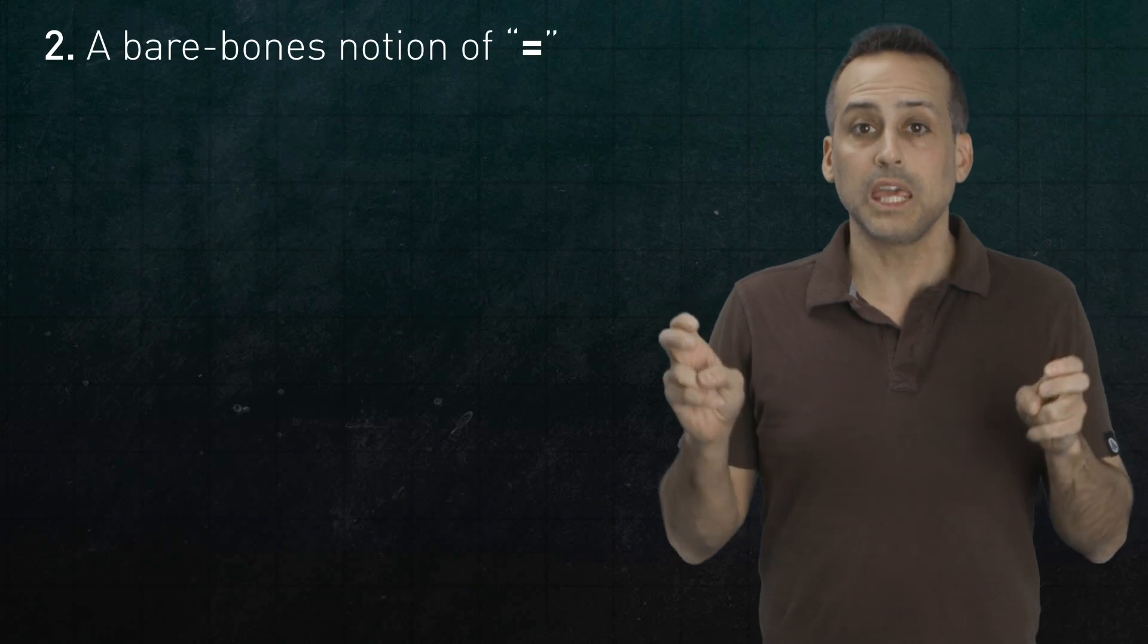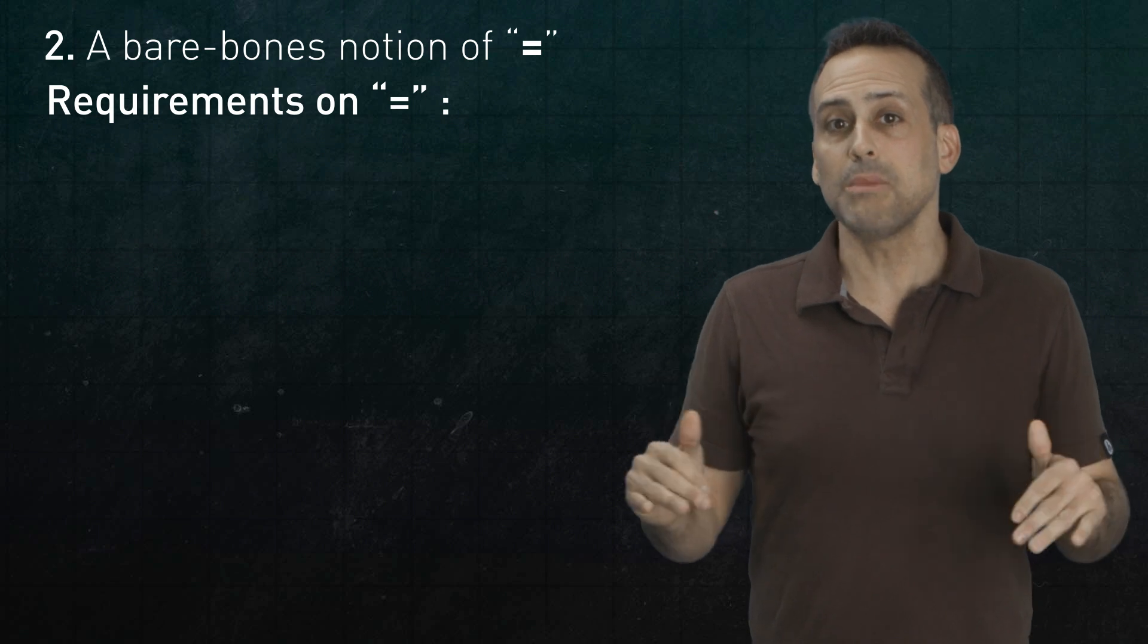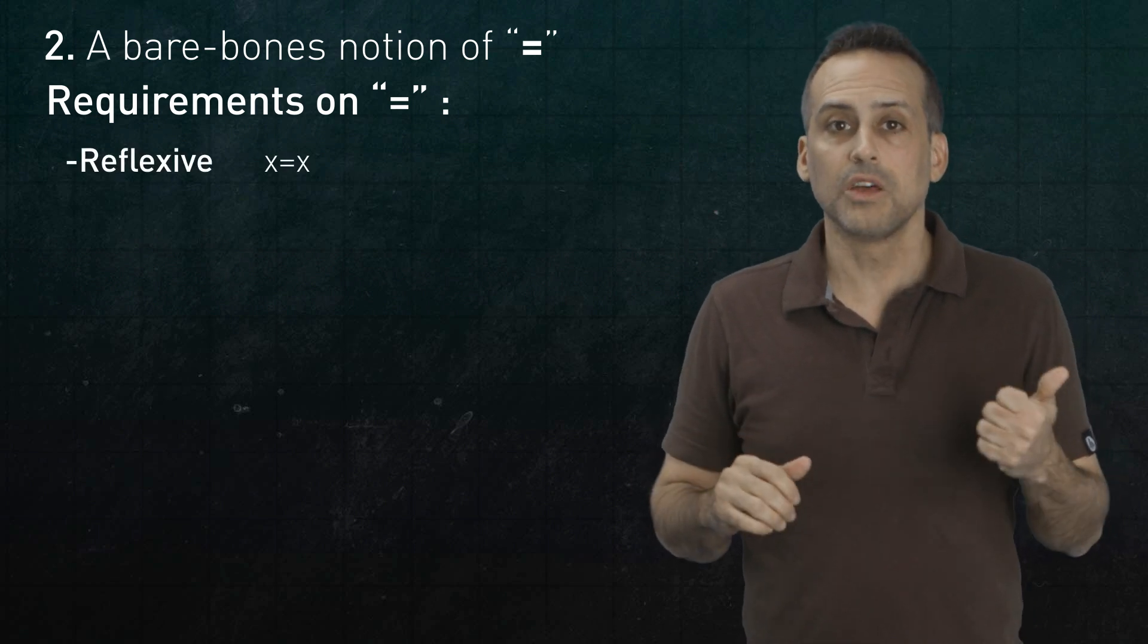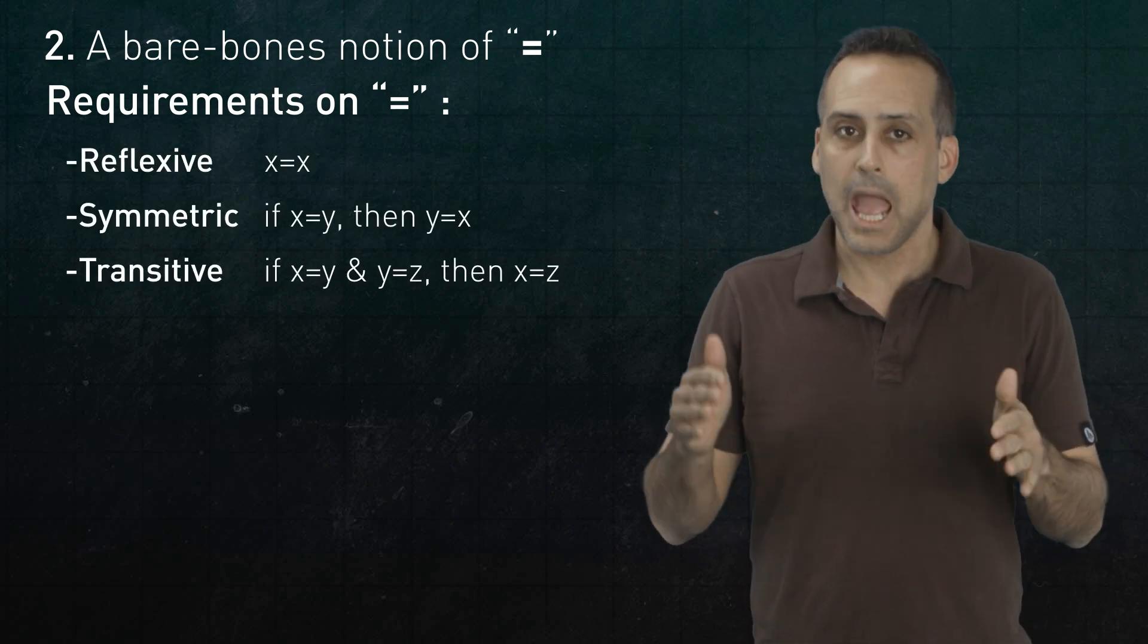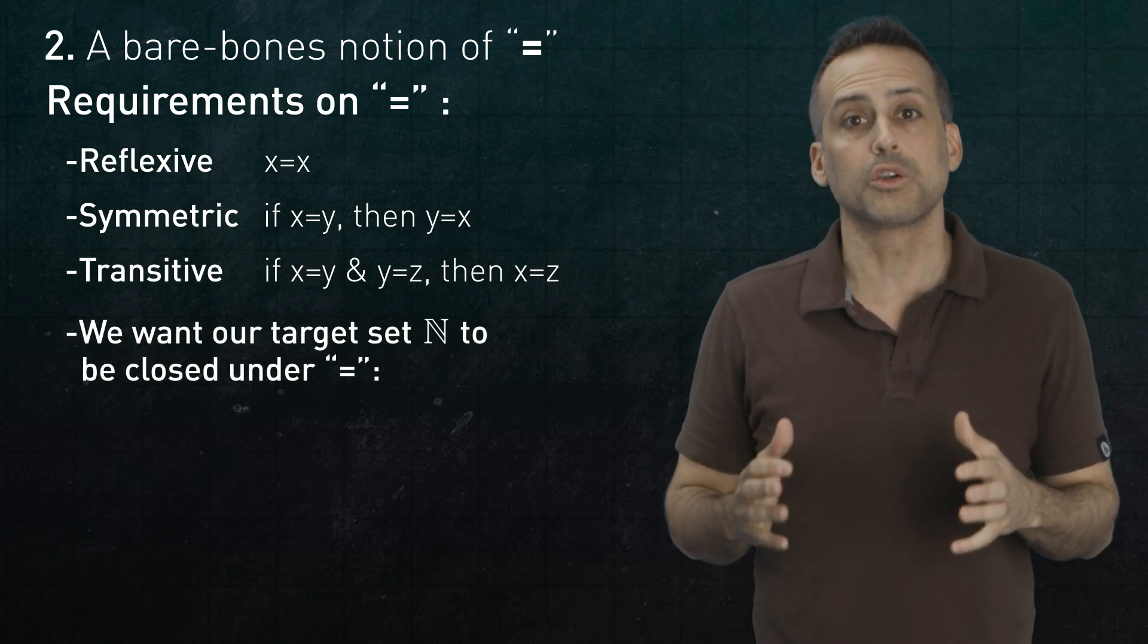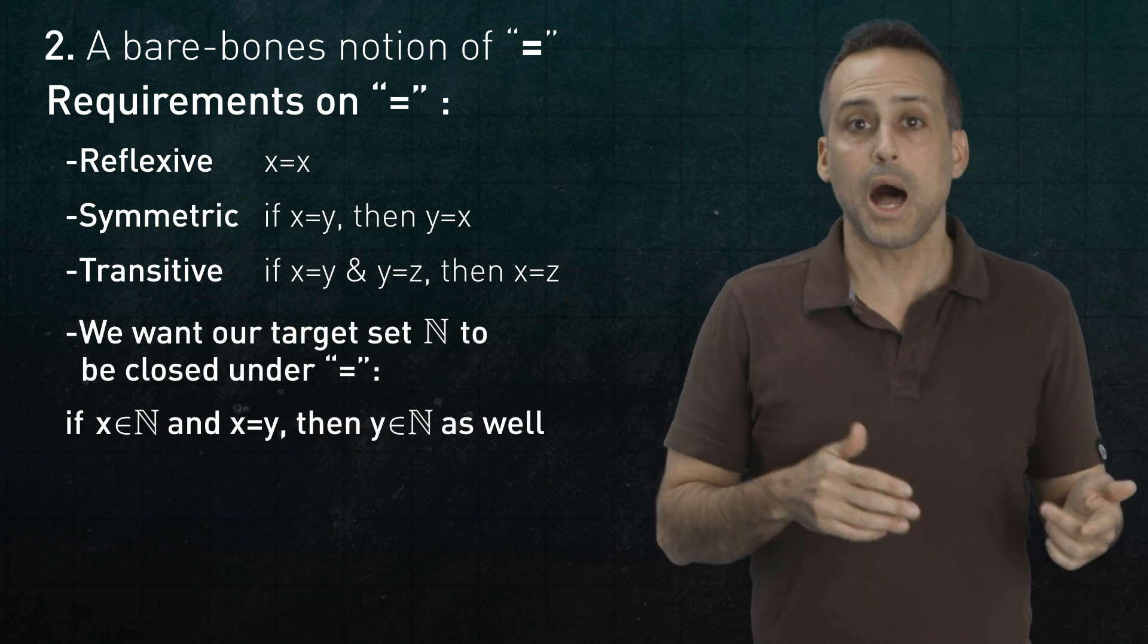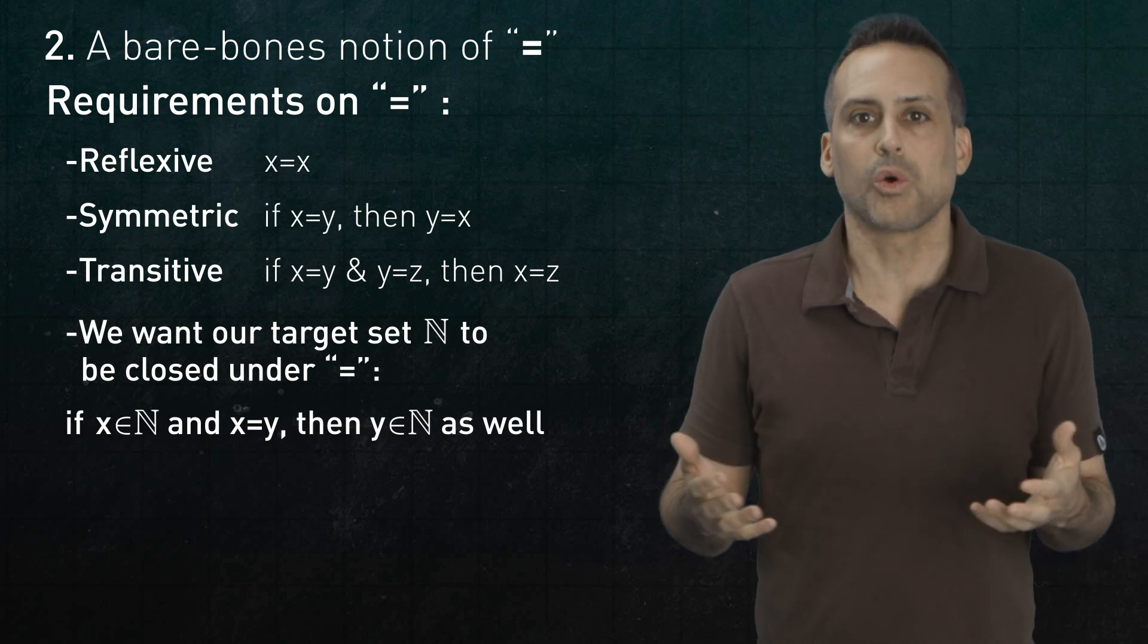Second, we need a concept of equals. We'll be very bare bones about this, requiring only that whatever equality means, the relation be reflexive, symmetric, and transitive. And we'll also demand that the set n we're trying to build be closed under equality. In other words, if x is a thing in n and x equals y, then y is also a thing in n, because of course, x and y are the same entity.